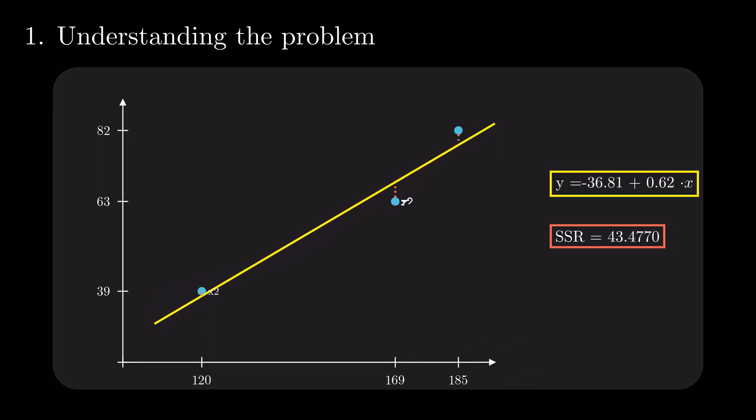Intuitively, having duplicate points in the same positions should not have an impact on this line. At this point, we know the components that can describe a regression problem, and we can start thinking better about what might change when we duplicate the dataset.